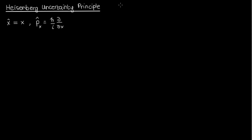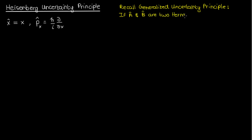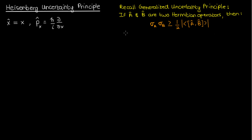In order to do that we're going to be using the generalized uncertainty principle, which I derived a few videos back. According to the generalized uncertainty principle, if I have two Hermitian operators A-hat and B-hat, then the product of their uncertainties or standard deviations must be greater than or equal to half times the magnitude of the expectation value of the commutator of A-hat and B-hat. Recall that the commutator is defined as A-hat B-hat minus B-hat A-hat — it's a measure of the extent to which A-hat and B-hat commute.